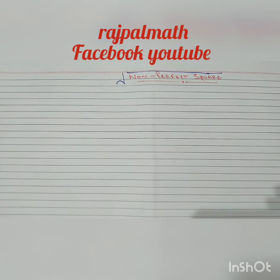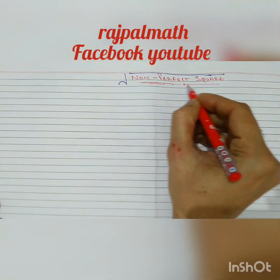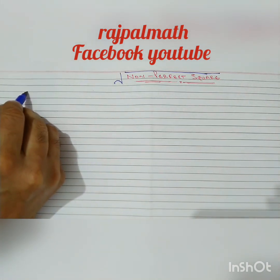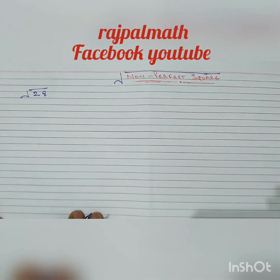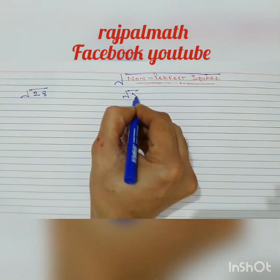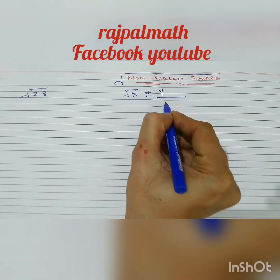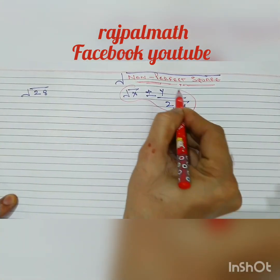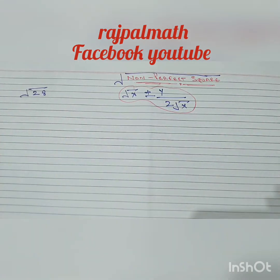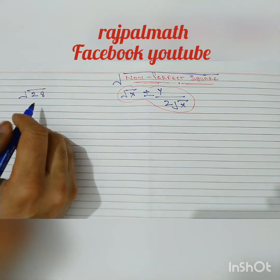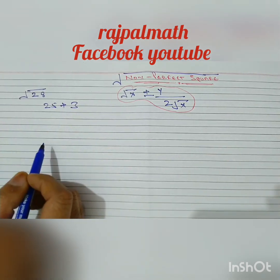Our next topic is to find the square root of a non-perfect square. The basic formulation to find the square root of a non-perfect square is: under root of (x ± y) ≈ (under root x) ± y over 2 times under root x. To find the square root of 28, we can write 28 as 25 plus 3.